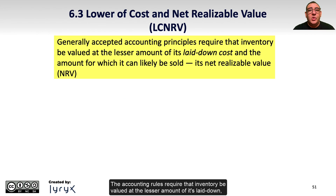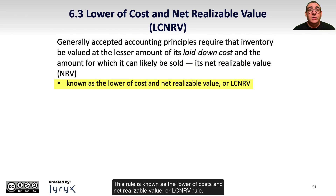The accounting rules require that inventory be valued at the lesser amount of its laid-down or landed cost and the amount for which it can likely be sold, its net realizable value or NRV. This rule is known as the Lower of Cost and Net Realizable Value, or LCNRV rule.